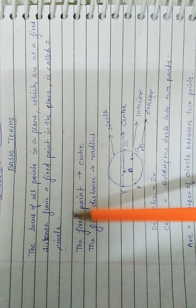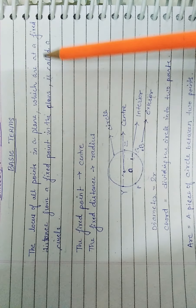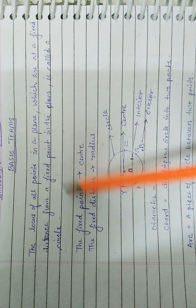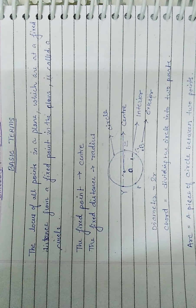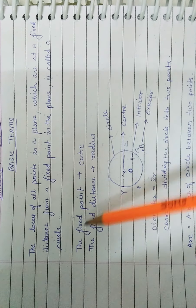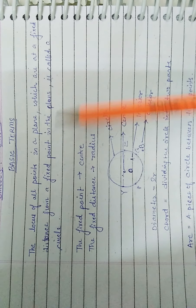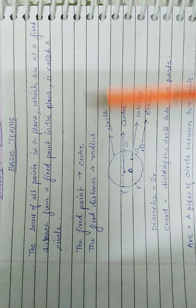The locus of all points in a plane which are at a fixed distance from a fixed point in the plane is called a circle. The fixed point is the center of the circle and the fixed distance is the radius of the circle.